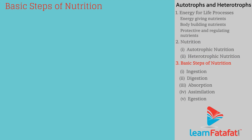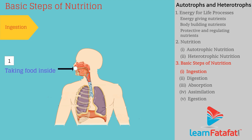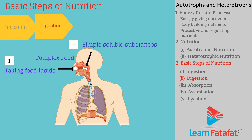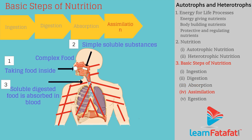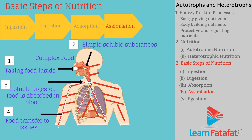Basic steps of nutrition: Ingestion is the process of taking food inside the body. Digestion is the process of breaking complex food material into simple soluble substances. Absorption is when soluble digested food is absorbed into the blood for transportation. Assimilation is when absorbed food is transported to tissues and cells for energy production, growth, or storage.